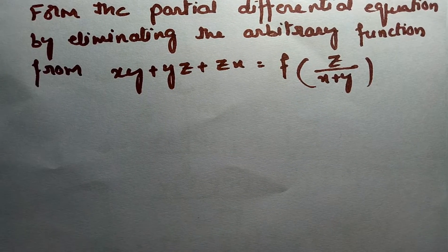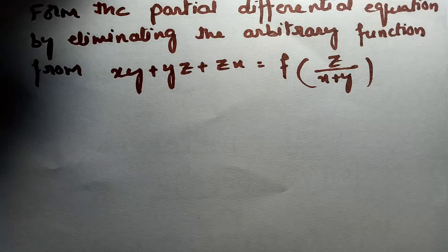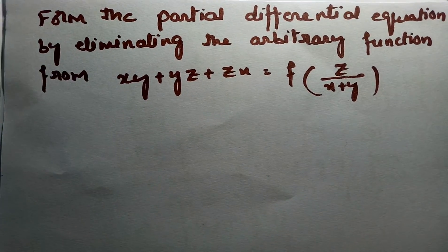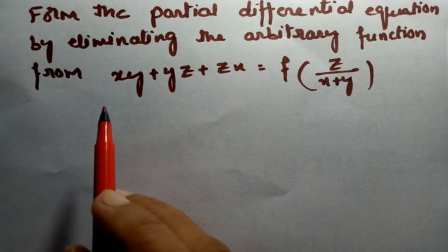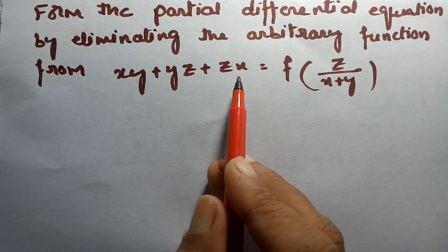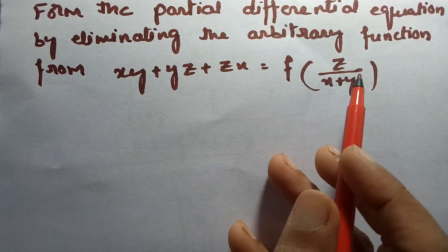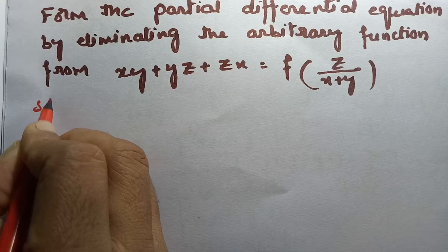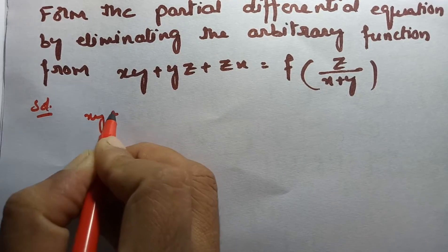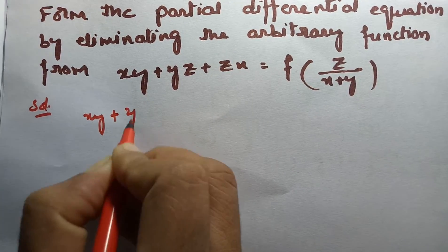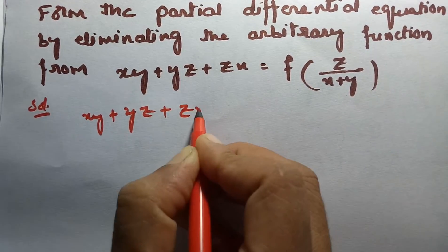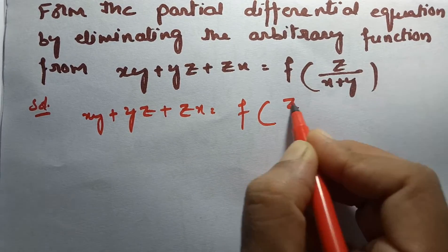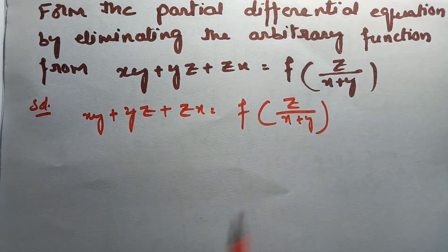Here is another problem. Form the partial differential equation by eliminating the arbitrary functions from the equation xy + yz + zx = f(z/(x+y)). Here is the solution. So, xy + yz + zx = f(z/(x+y)).